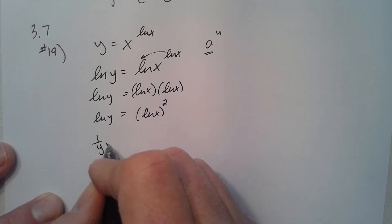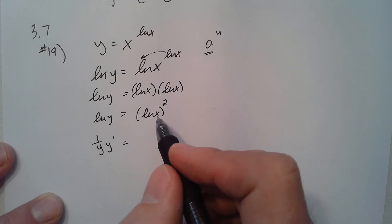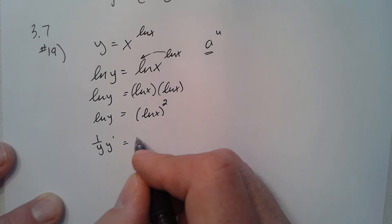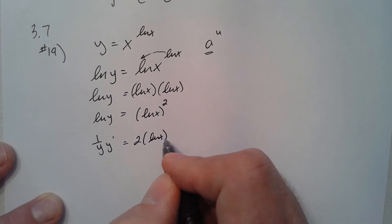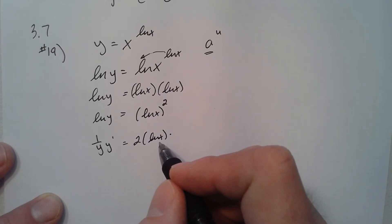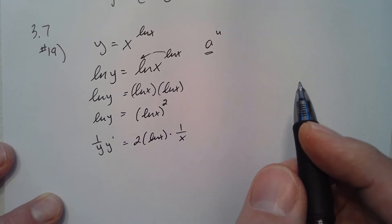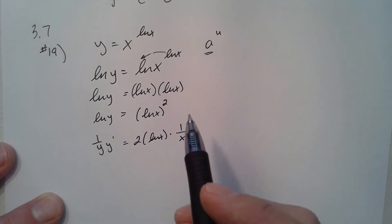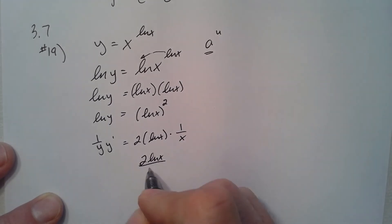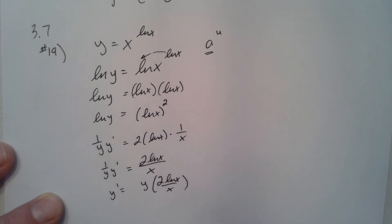So now I'll find the derivative. Derivative of natural log of y is 1 over y times y-prime. For the u squared, ln x - natural log x is the u - so it's 2 natural log x to the first times the derivative of the inside. Derivative of natural log x is 1 over x, so I have 2 natural log x over x. I'll multiply both sides by y, where y is x to the natural log of x.